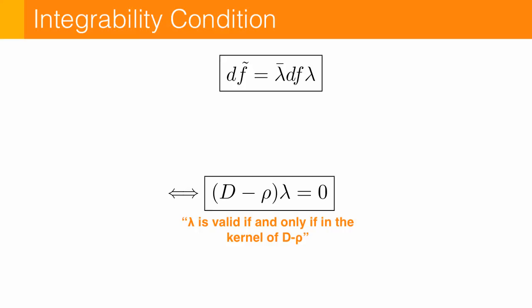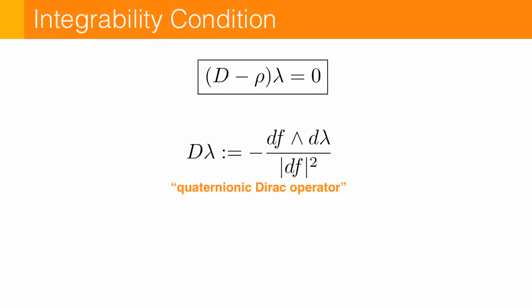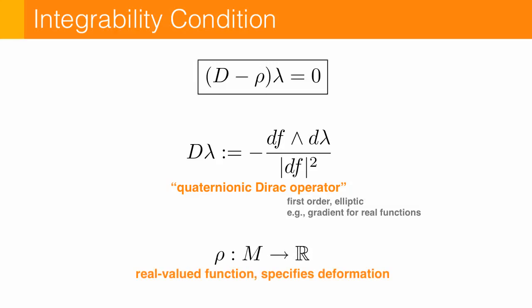Alright, but what is this operator d minus rho? Well, d is something we call the quaternionic Dirac operator, which at least for real valued functions is just the usual gradient. And rho is a real valued function on the surface that we're going to use to specify a deformation.